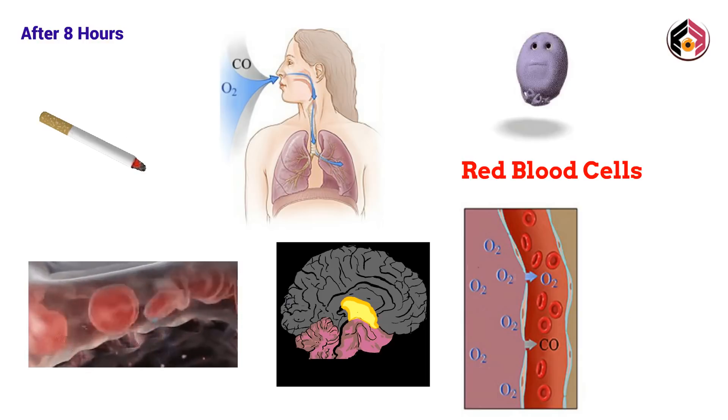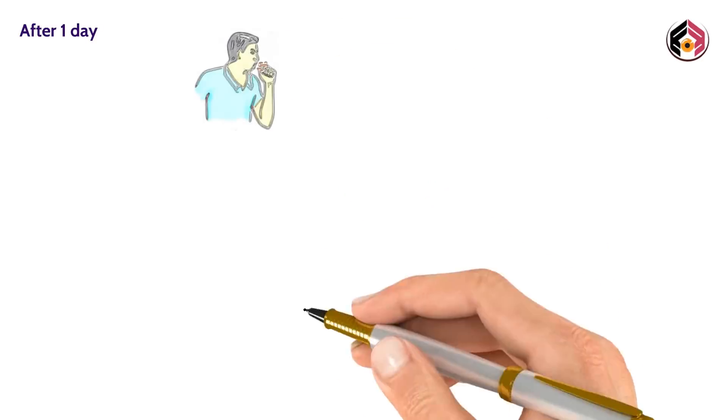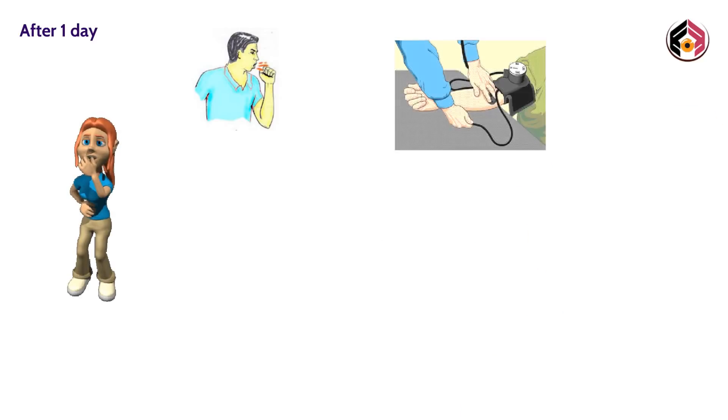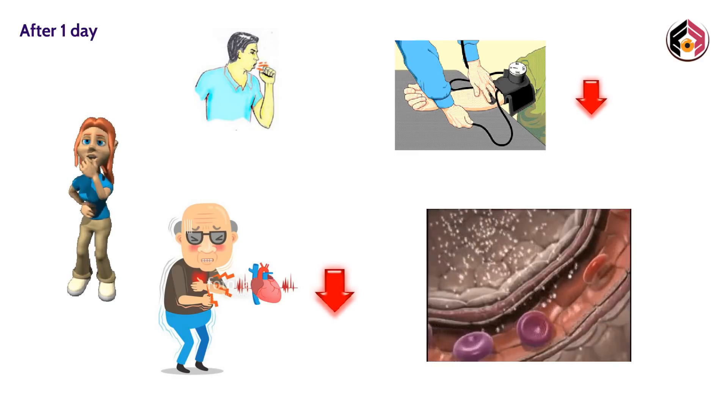After one day, coughing increases as the body clears out toxins like mucus, debris, and other gunk from the lungs. In this time frame, a person's blood pressure begins to drop, and the risk of heart attack from smoking will rapidly drop. The normal oxygen levels of the body will have risen.